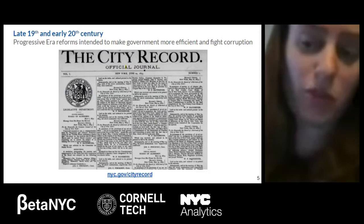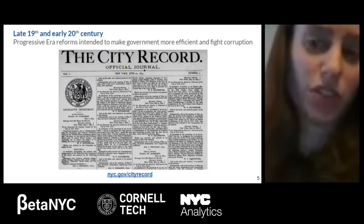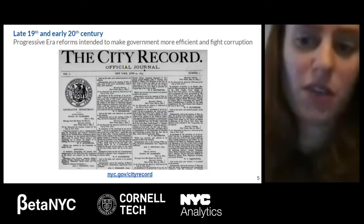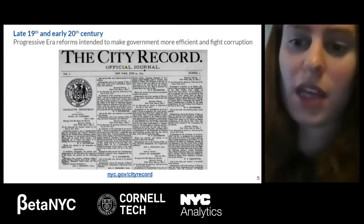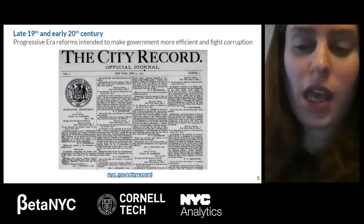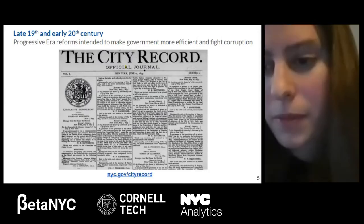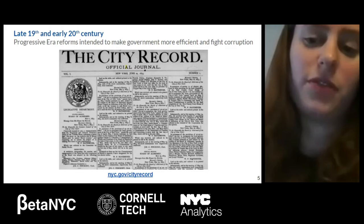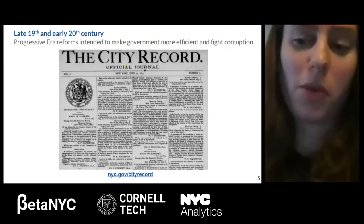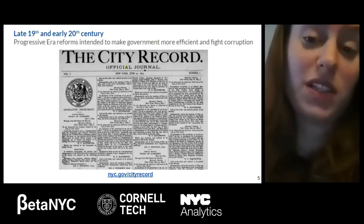The roots of the open data movement in New York City can be traced to good government efforts in the late 1800s and the progressive era of government reform. There was a movement to reform how city government was running as a result of the Tammany Hall political machine, in the wake of city scandals and corruption. The City Record, published in 1873, came out of this movement to make government more transparent. Around this time, the Department of Investigations was also created. The City Record is a central repository for city solicitations, public notices, purchases, and hiring, and it still exists today both in print and online.